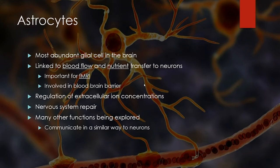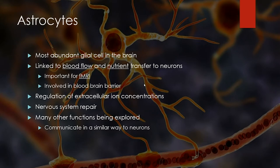Astrocytes are also involved in other functions — they regulate extracellular ion concentrations, which makes it possible for neurons to fire action potentials. They're heavily involved in repairing damaged neurons and damaged vasculature. And in molecular neuroscience, researchers are finding that astrocytes actually have communicative abilities of their own — they can pass signals along with calcium, just like neurons talk with each other. We have no idea how that adds into the whole network property of what's going on. We know a lot more about the brain than we did 50 years ago, but we still don't know nearly enough.